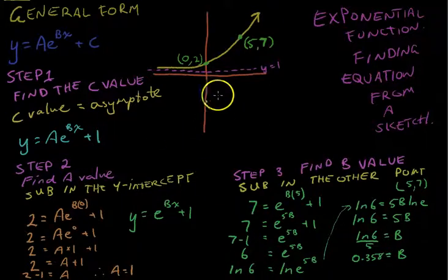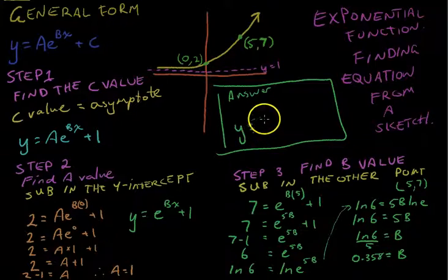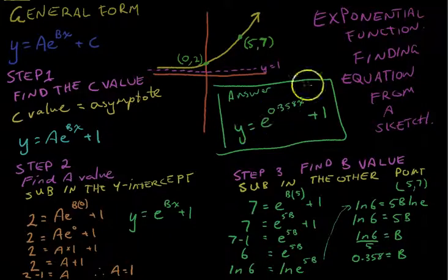Make sure that you finish with an answer. The answer is y equals - now the A value is 1, so no need to write it in - y equals e to the 0.358x plus the C value, which is 1. So if you type this into your graphics calculator, you should get an exponential function that looks just like that.